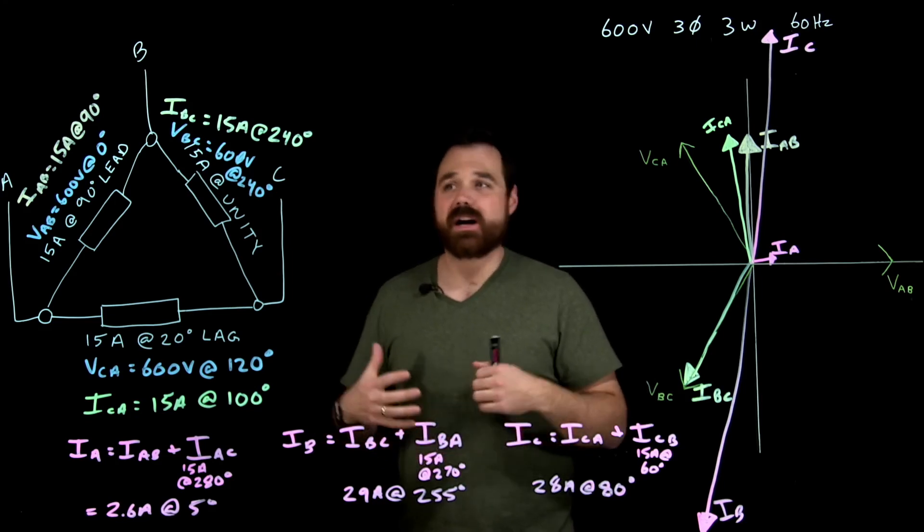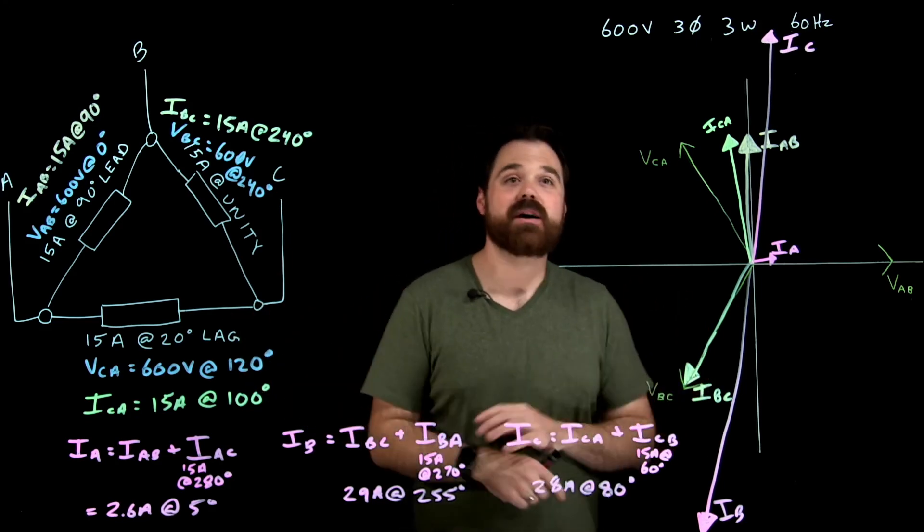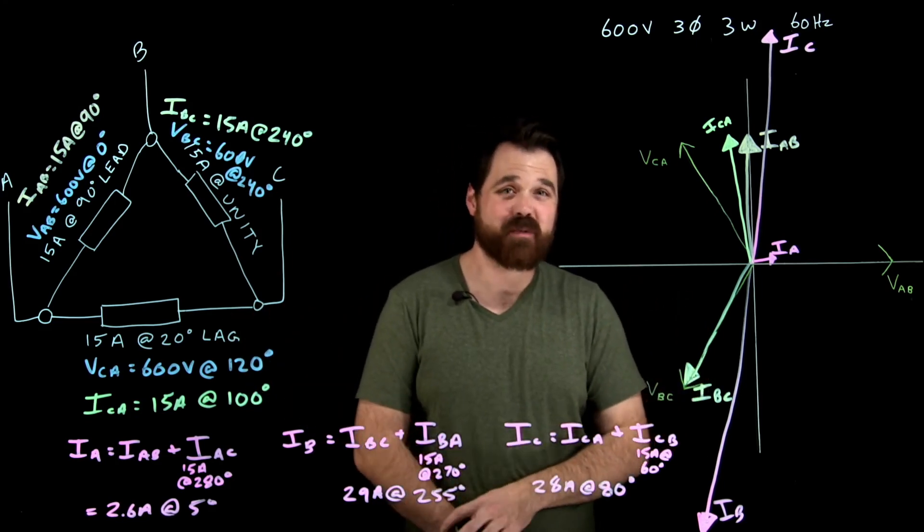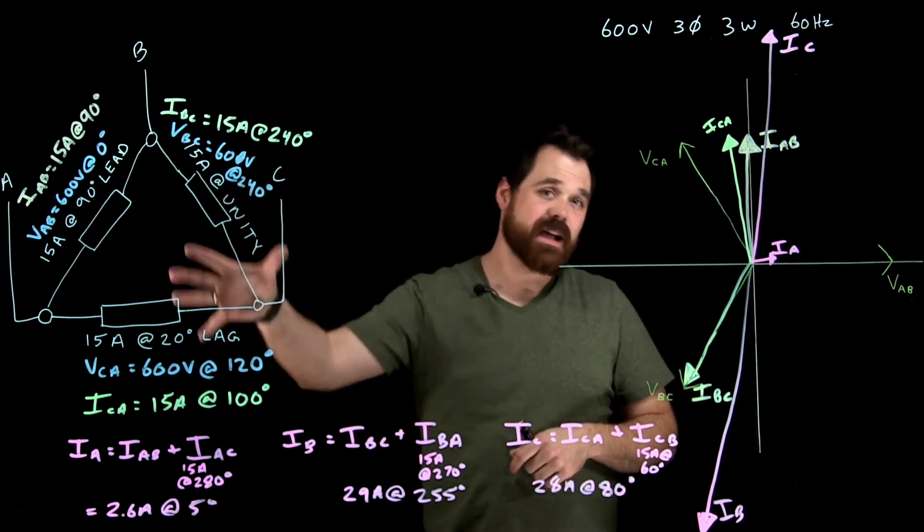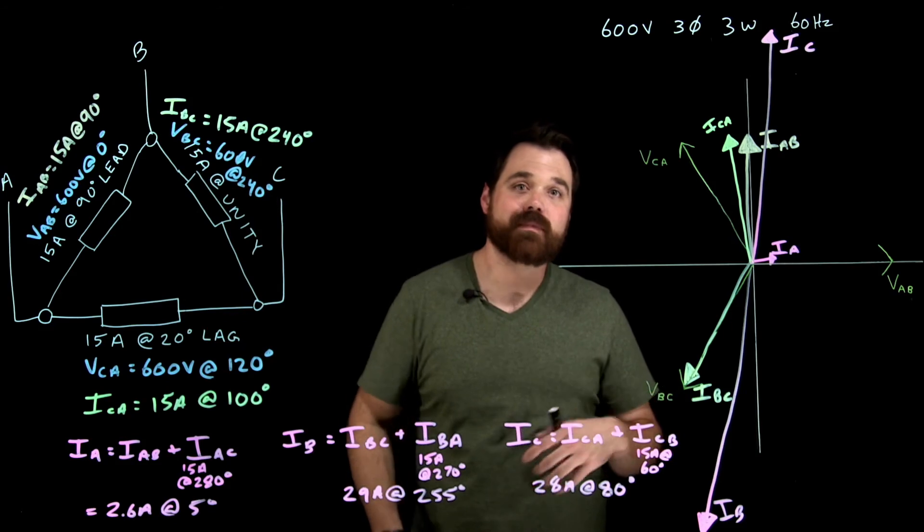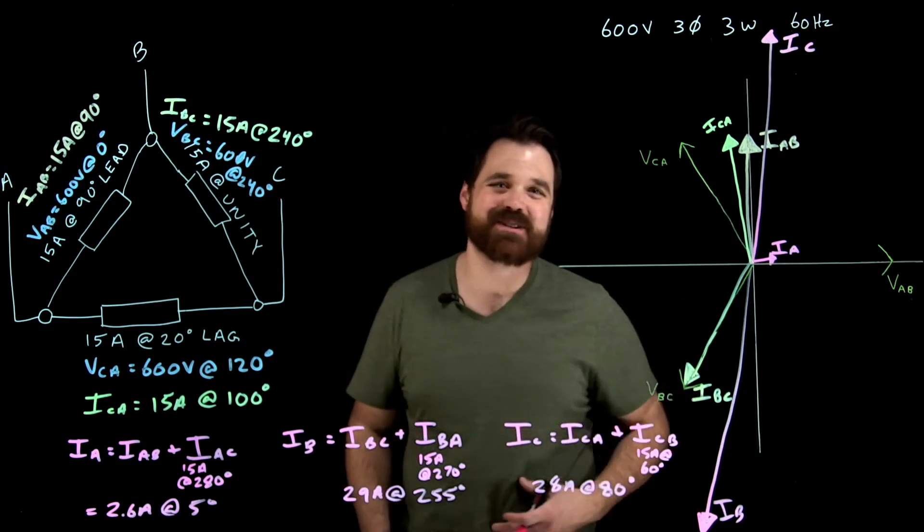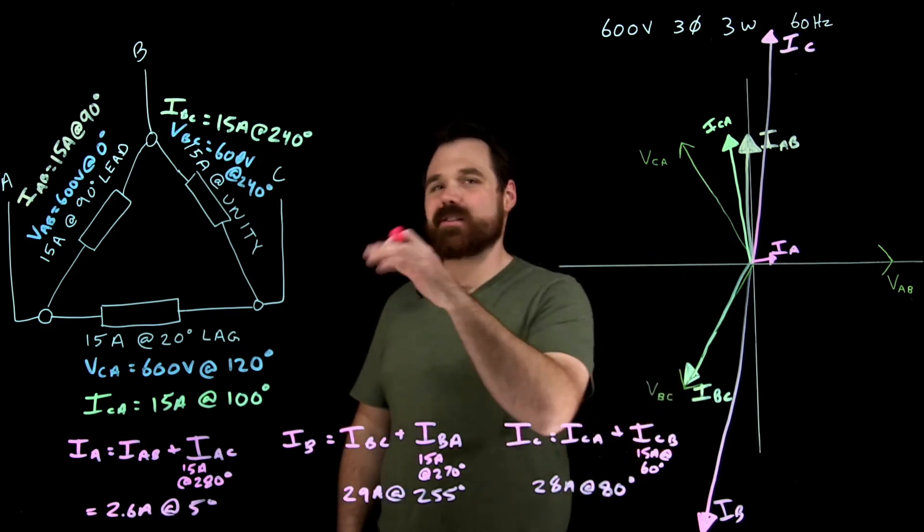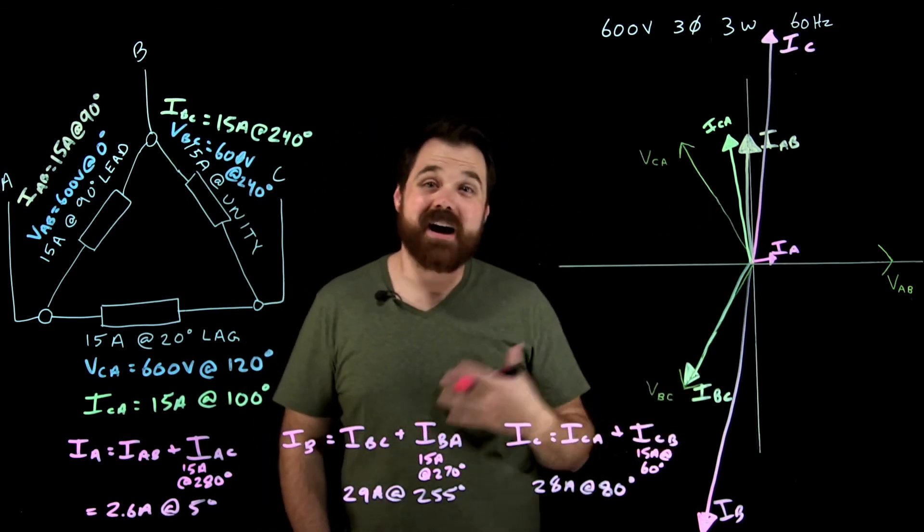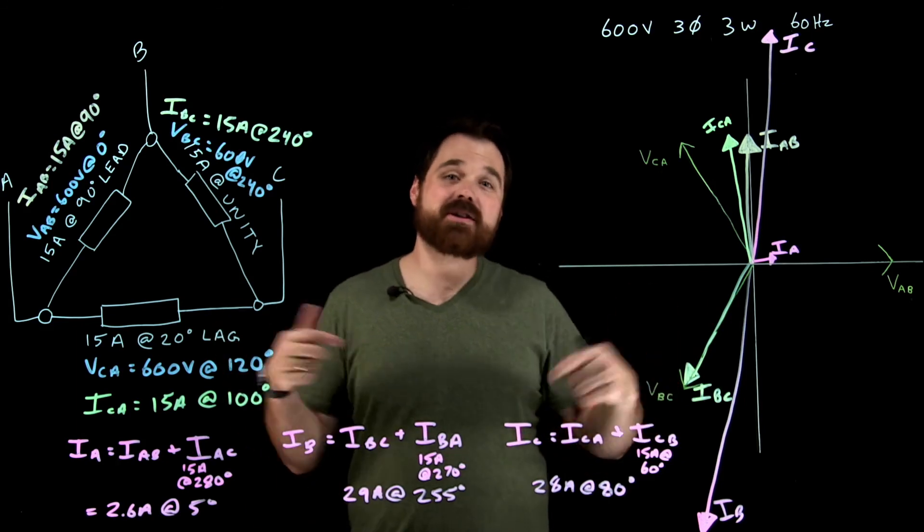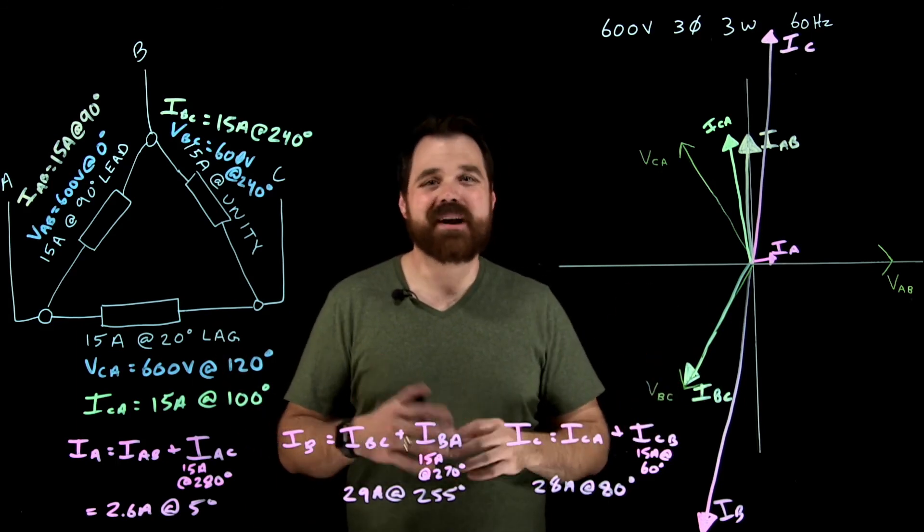So thanks so much for watching. Pretty much the trickiest type of unbalanced delta problem you're going to get, where each phase has a different power factor. In this case, they all have the same impedance, but that would be the worst case scenario is if they all have different impedances as well. But that's how this one plays out. So thanks so much for watching. Make sure you check out my other videos down below and have a great day.